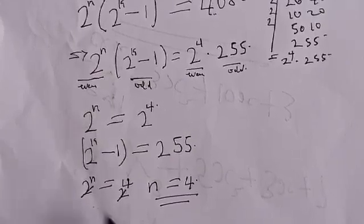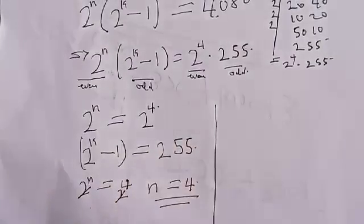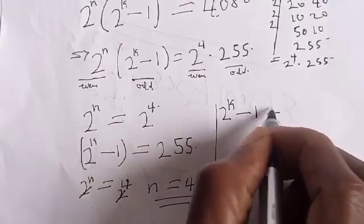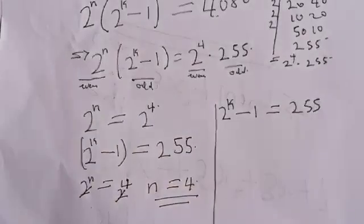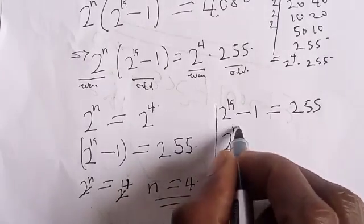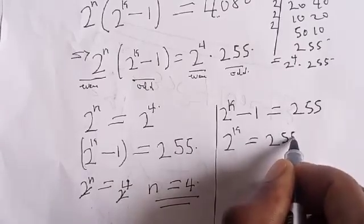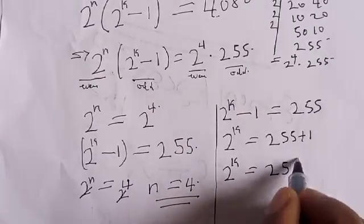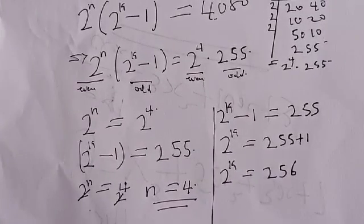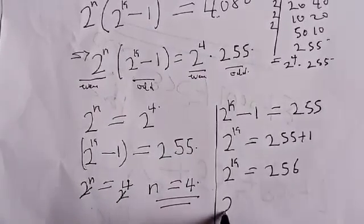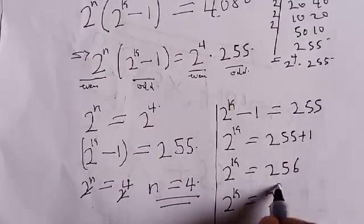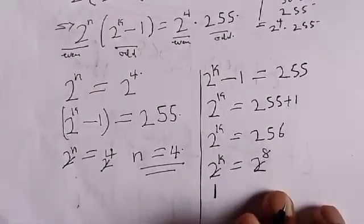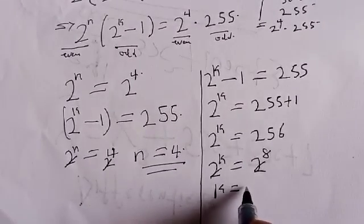Now let's solve for k. Recall that 2 raised to power k minus 1 is equal to 255. This implies that 2 raised to power k is equal to 255 plus 1, which is 256. And 256 can be expressed as 2 raised to power 8. Since we have the same base, k is equal to 8.